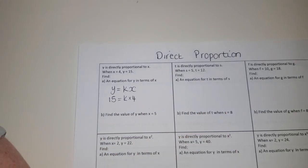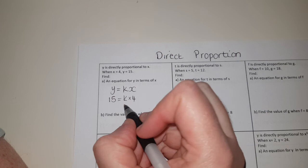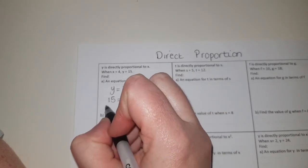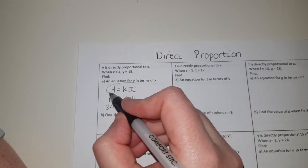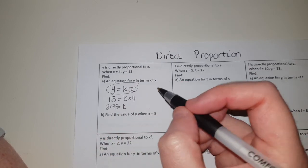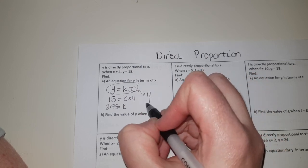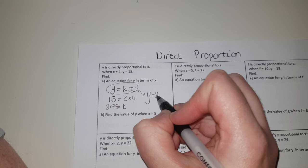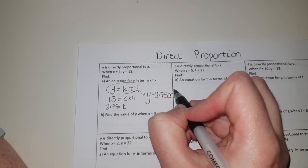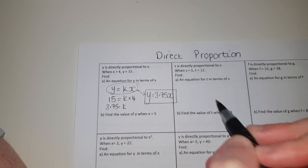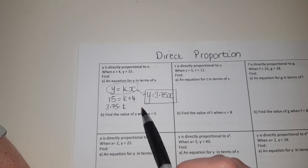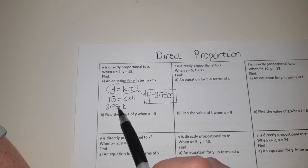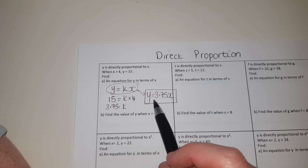So all you're going to do is divide by 4. You're going to get 3.75, so k is equal to 3.75. That means your actual equation linking x and y, and this is where a few people made a mistake the last time you did this in a paper, is you know that it's y equals kx. Now that we've worked out what k is, our equation is actually y equals 3.75x. That's your actual answer. In the answer there should only be a y and an x, there shouldn't be any extra letters involved.